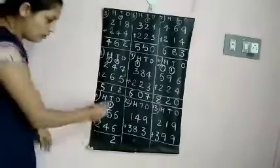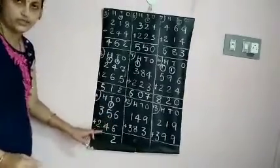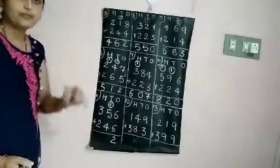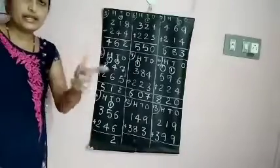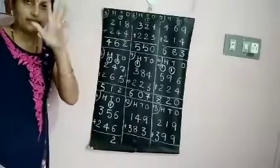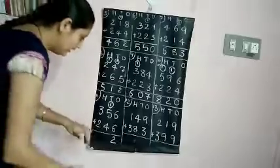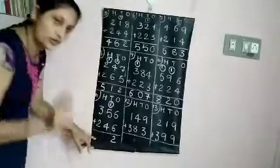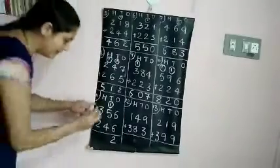Add the tens now. 1 plus 5 is 6. 6 plus 4. 6 after: 7, 8, 9, 10. 6 plus 4 is 10. Again you have got 2 digits: 1, 0 — 10.